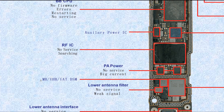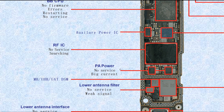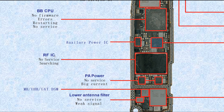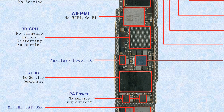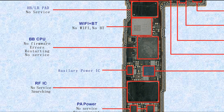This one is the MB UHP UAT DSM — MB means medium band, UHP means ultra high band, UAT means up antenna, DSM means digital switch module — so this is an antenna switch. These two PA power ICs — if broken, they cause no service, big current, no power, or no booting. This one is the RF IC, which means transceiver — receiver and transmitter. If broken, it causes no service or charging. This one is the auxiliary power IC. This one is the BB CPU — baseband CPU. If broken, it causes firmware errors, restarting, or no service.